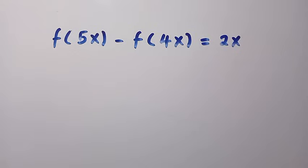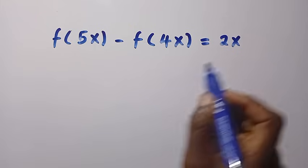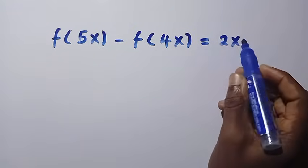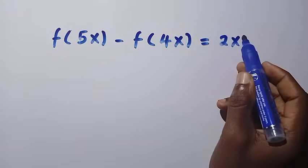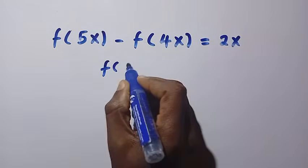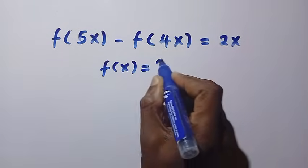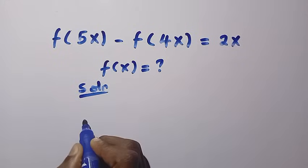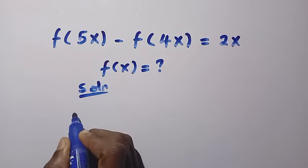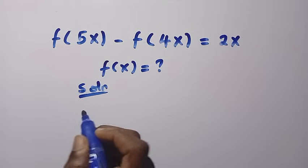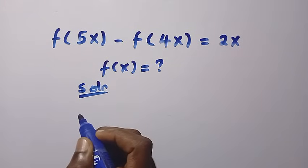At this side we have a linear function because the degree of x is 1. To find f(x), let's consider the solution here and assume a polynomial function for which we have to find the degree and the coefficients.